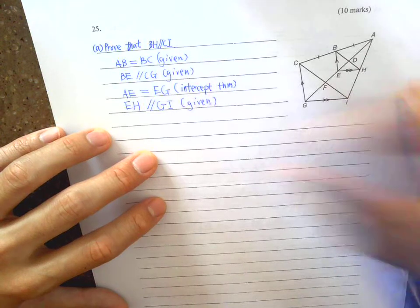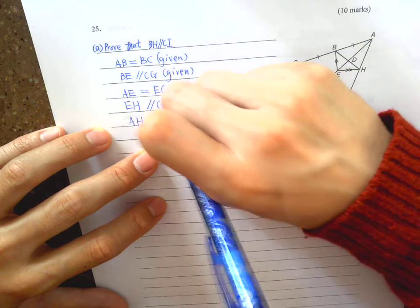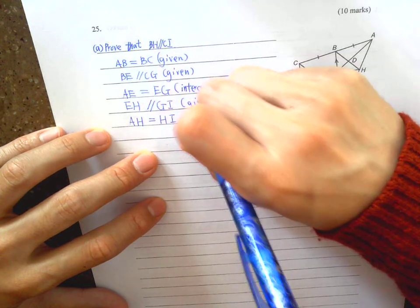AH equals HI, again by the intercept theorem.